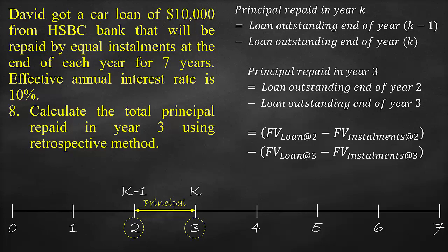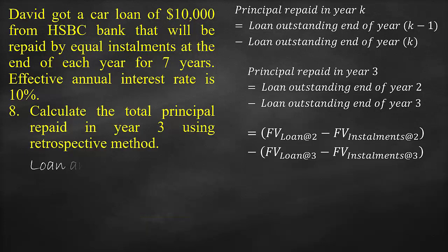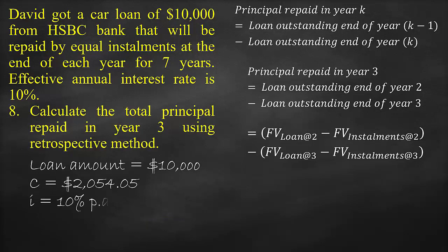We have a loan amount of $10,000, a periodic instalment of $2,054.05, the effective annual interest rate of 10%, and the total number of periods is 7 years. The number of paid instalments is 3 years.